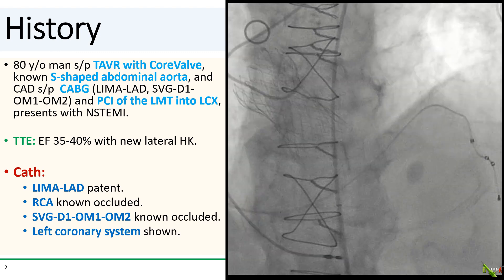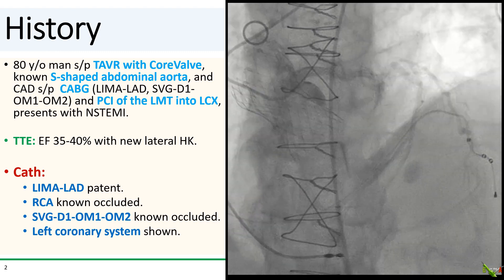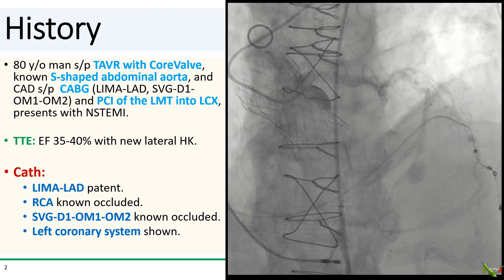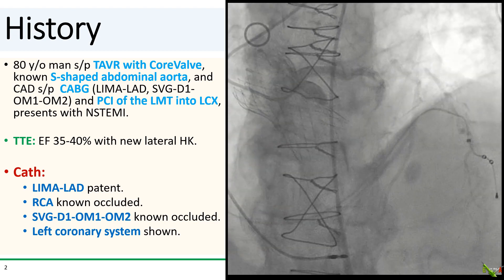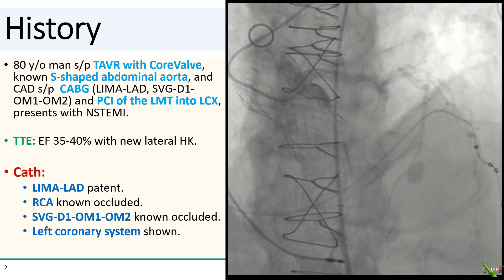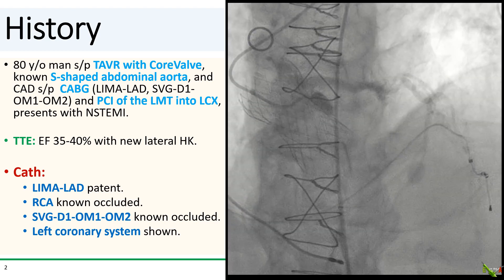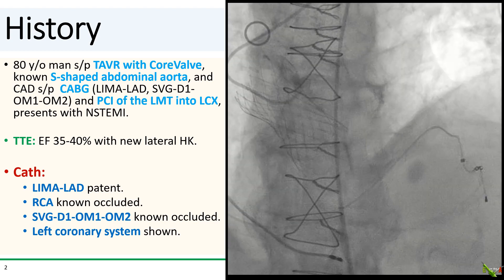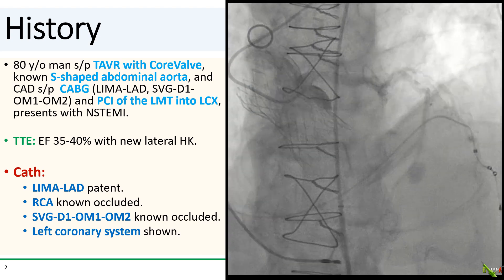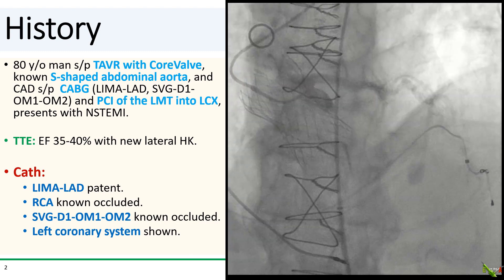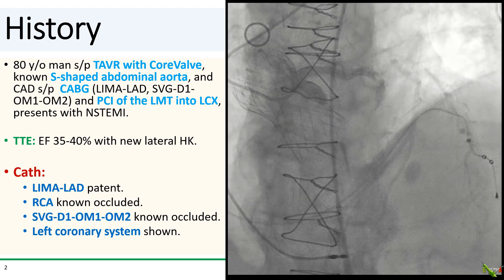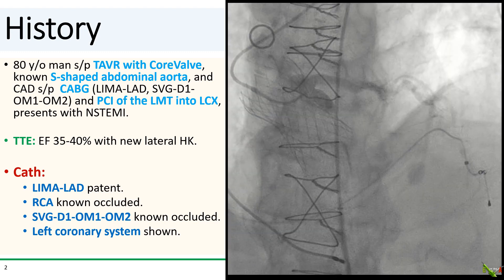That vein graft occluded after a couple of years and he underwent PCI of the left main into the circumflex. He now presents with chest pain and was enrolled for a non-STEMI. His echo showed a moderately reduced EF with new lateral hypokinesis. On cath, the LIMA to LAD was patent, and both the RCA and vein graft were known to be occluded, so they were not engaged.